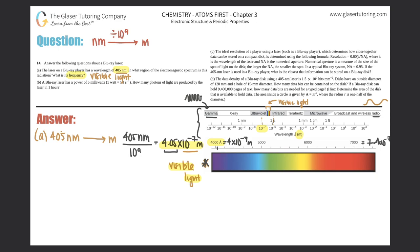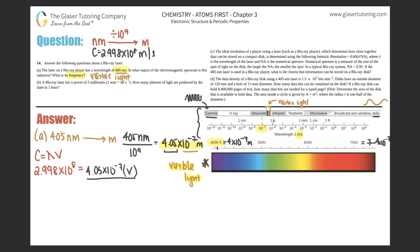Now for the frequency: we use the speed of light formula c = λ × f, where c = 2.998 × 10⁸ meters per second. The wavelength must be in meters, so we use 4.05 × 10⁻⁷ m. Solving for frequency, we divide both sides by 4.05 × 10⁻⁷.